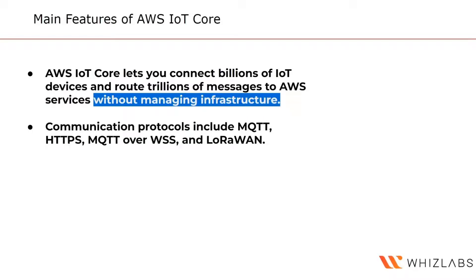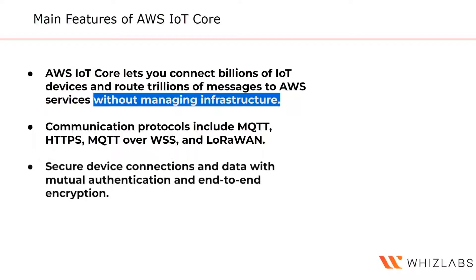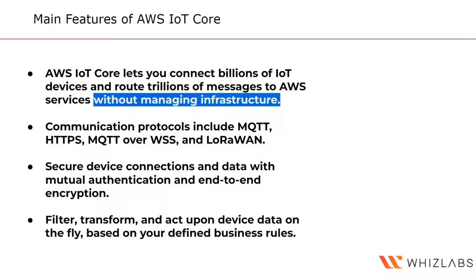Popular protocols are supported, including MQTT (SHQ Telemetry Transport), HTTPS, MQTT over WebSockets, and LoRaWAN. Security features ensure no rogue devices connect to AWS IoT Core, every device can authenticate, and all communication between devices, AWS, and applications is encrypted. The data you receive can be massaged, filtered, and transformed, and based on rules you set up, you can act upon device data on the fly.